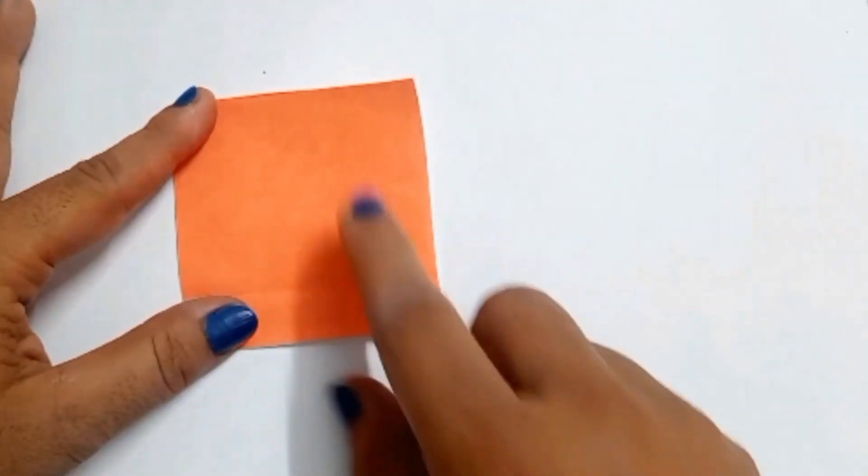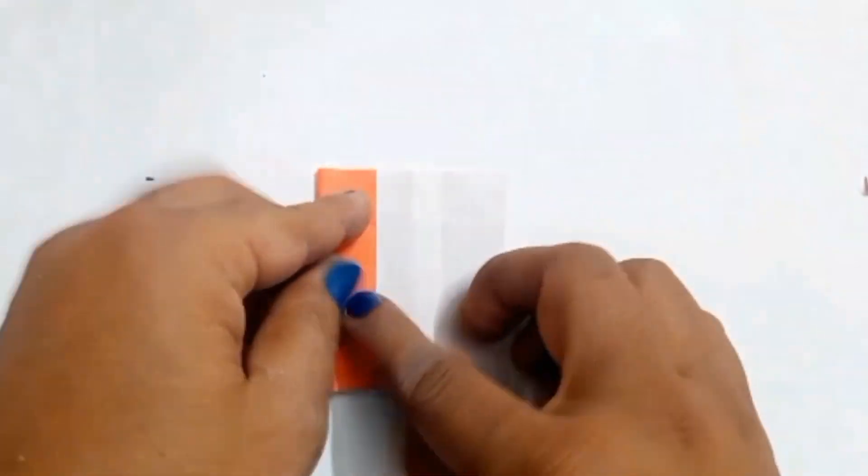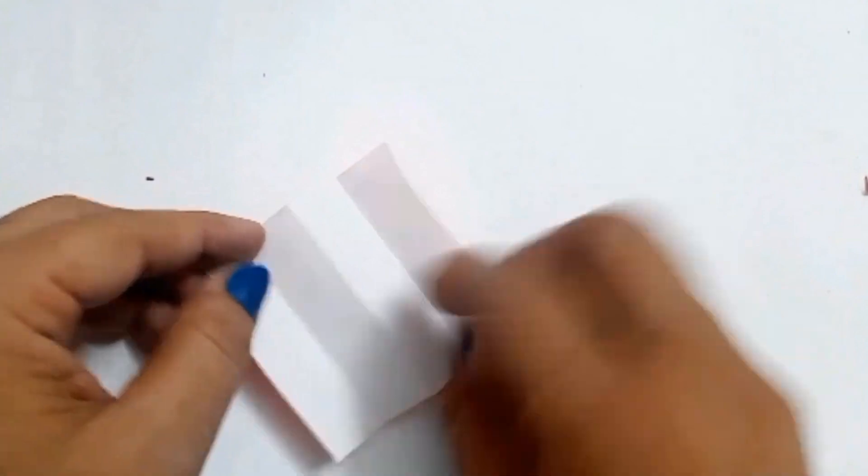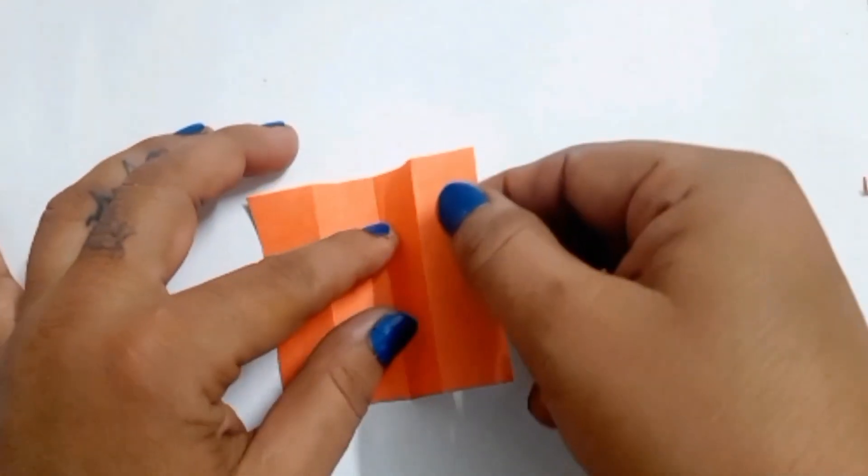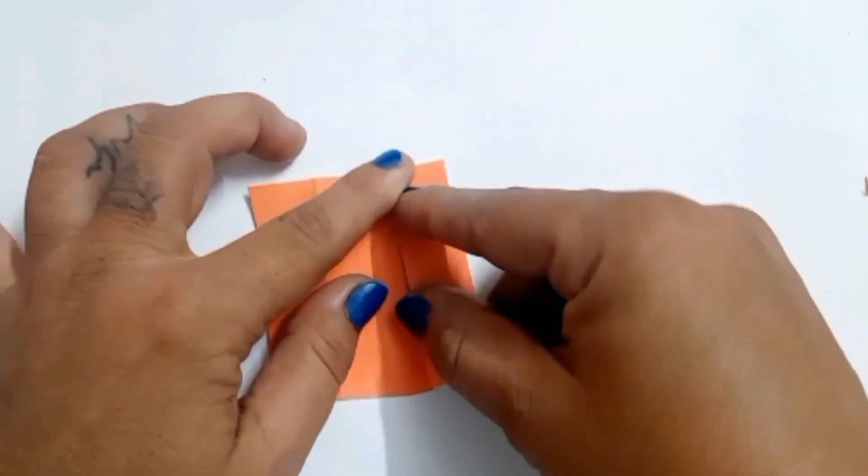To make skirt, take a small square shape sheet. Fold the right and left edges to the middle. Open it now. You have got the crease. Turn over and start folding in this manner. Make the plates.